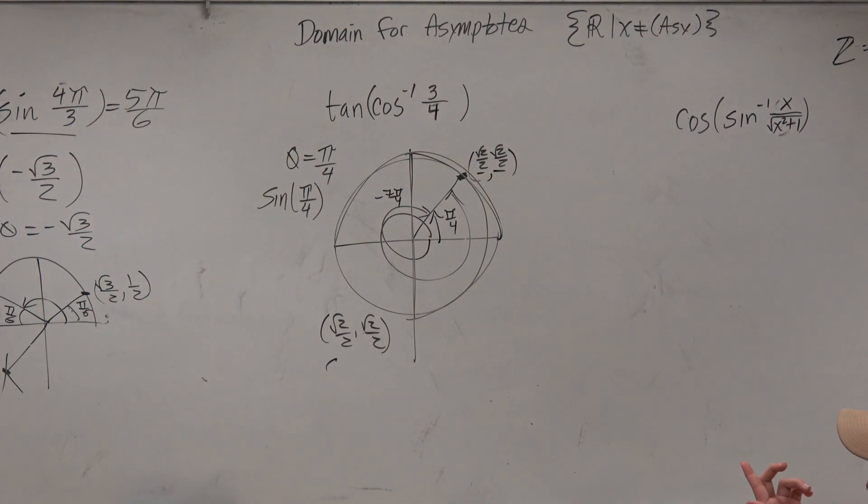So pi over 4 and then we're taking a fourth quadrant here? Yep.